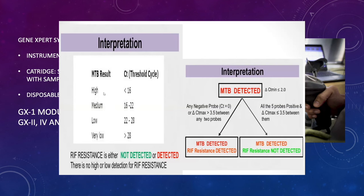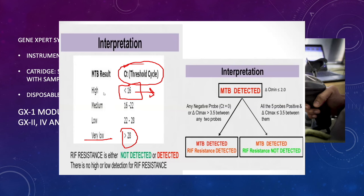How does it interpret the test? It is a qualitative test that looks at the cycling threshold — how many cycles it takes to detect the DNA. If fewer than 16 cycles: the report is 'high.' 16 to 22: 'medium.' Less than 28: 'low.' More than 28: 'very low.' So 'MTB detected very low' means it took more than 28 cycles; 'MTB detected high' means fewer than 16 cycles, indicating high bacterial load. Rifampicin resistance is reported only as 'detected' or 'not detected' — there is no high or low in the rifampicin resistance report.